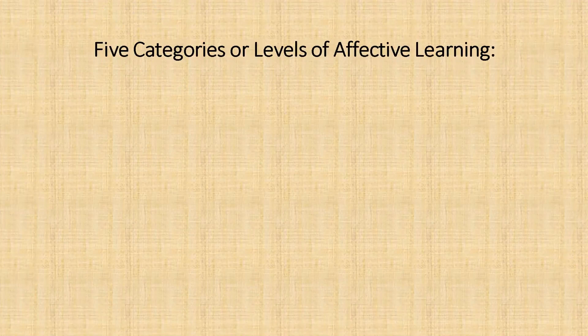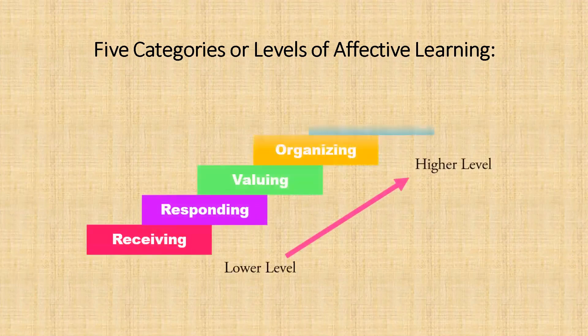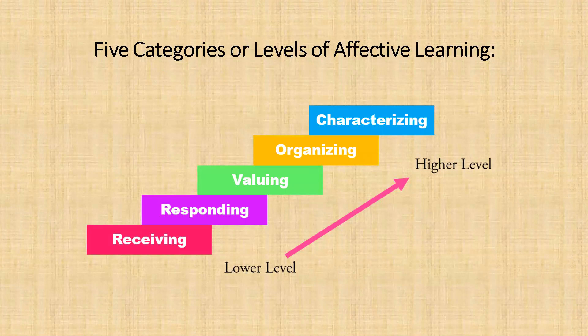Krathwohl and Bloom in 1964's Taxonomy of Affective Domain describes the five categories or levels of affective learning. These five levels, listed from their simplest behavior to the most complex, are: receiving, responding, valuing, organization, and internalizing values, also known as characterization by value.